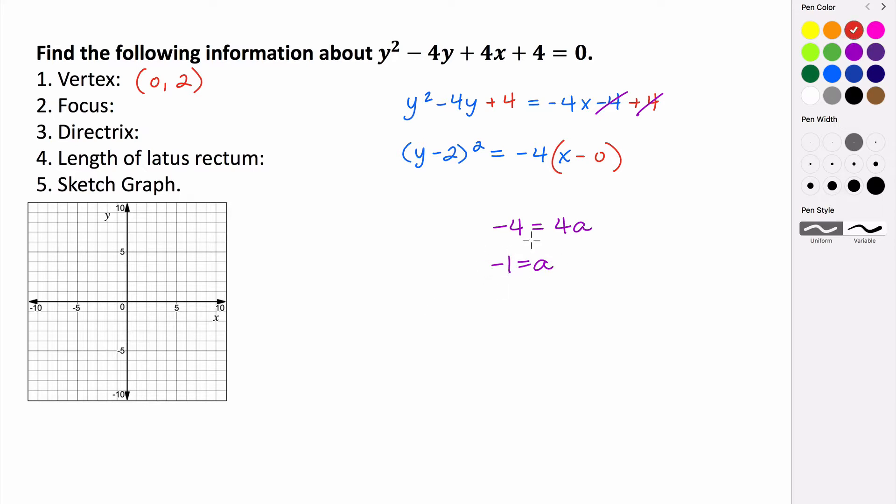So that means that our focus is going to be 1 unit to the left. Because again, this opens left to right. Because a is negative, that tells us it opens to the left. So let's first plot our vertex. Our vertex is here at 0, 2.